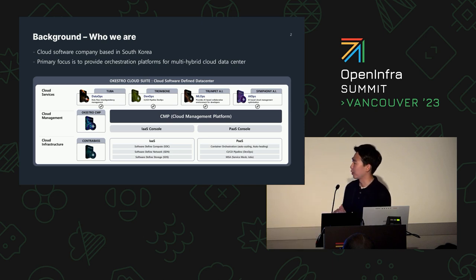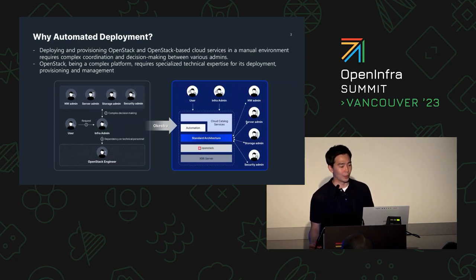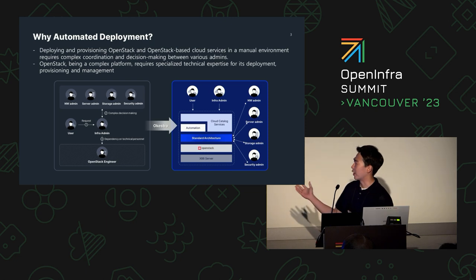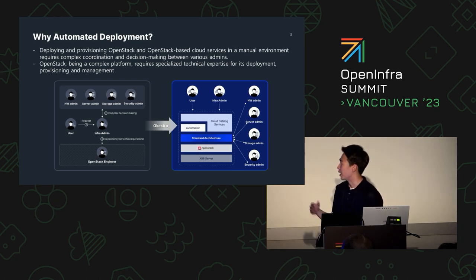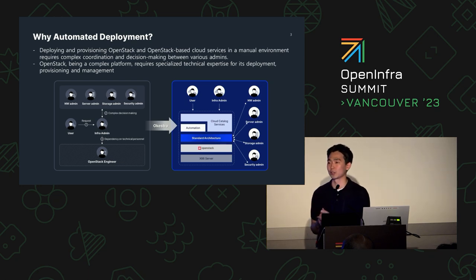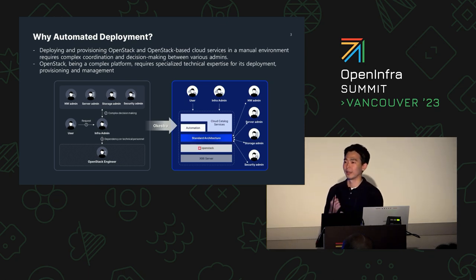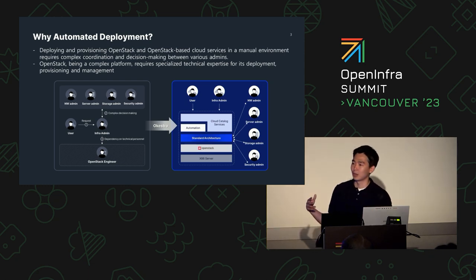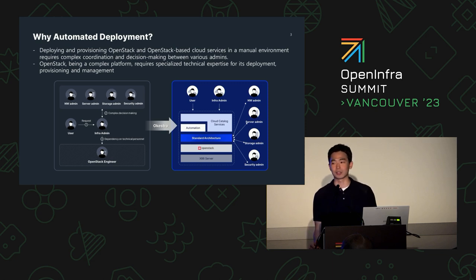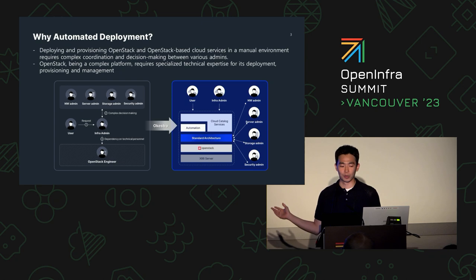Within those solutions, we'll be talking specifically about our Contrabase, which is our IaaS solution. So why is automated deployment necessary? In this diagram, you can see on the left side the manual processes required before automation takes place. When there's a request for deployment, the infrastructure admin has to communicate with various administrators across servers, network, storage, and security teams. This complex process involves manual work and reliance on OpenStack technology experts, which can produce bottlenecks — especially for clients performing repetitive manual tasks. We want to provide automation to lessen these burdens and deliver more efficiency.